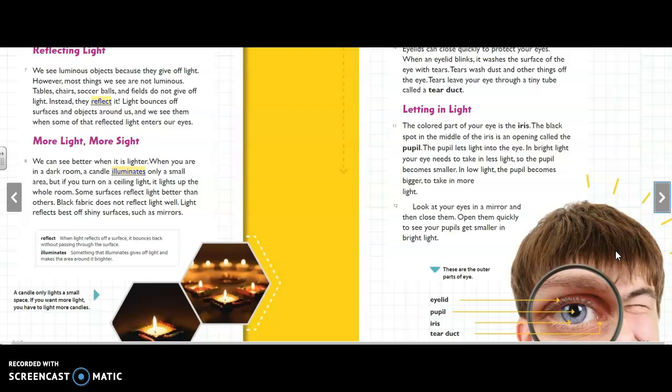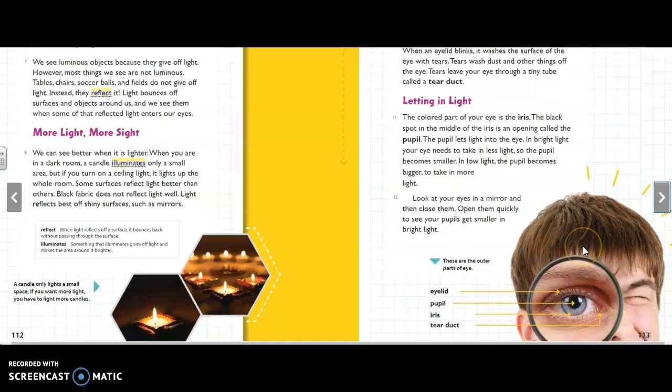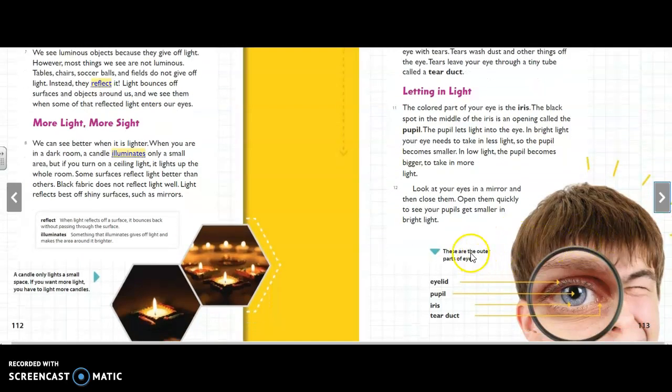And here we have a diagram showing you the outer parts of your eye. There's the eyelid, pupil, iris, and tear duct.